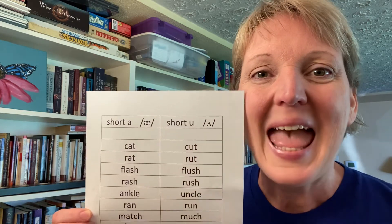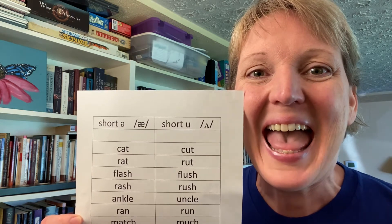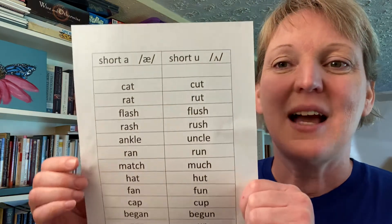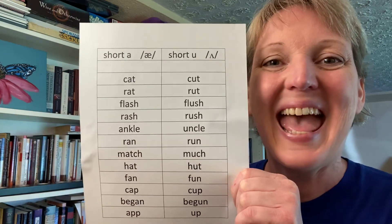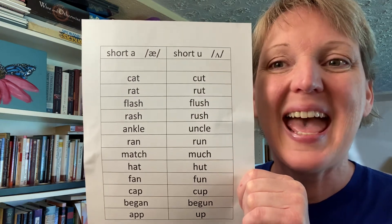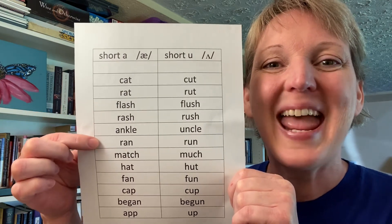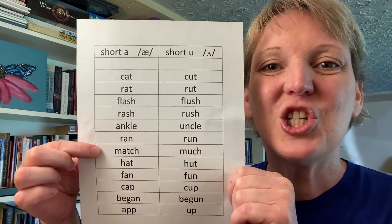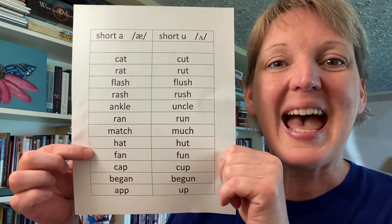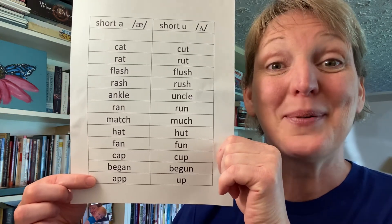I'll do it several times: /æ/ /æ/ /æ/ /ʌ/ /ʌ/ /ʌ/. In the short A sound we have words like: cat, rat, flash, rash, ankle, ran, match, hat, fan, cap, began, and app — like what we use on our phones.